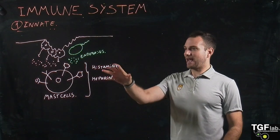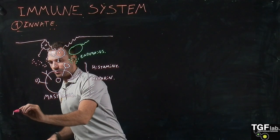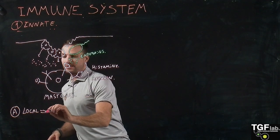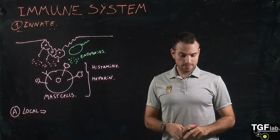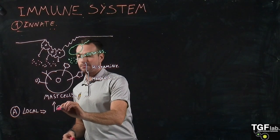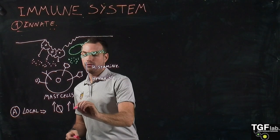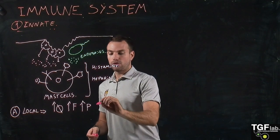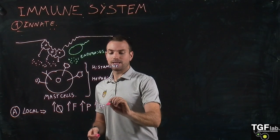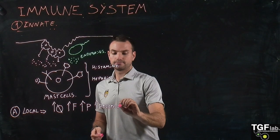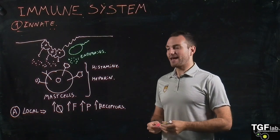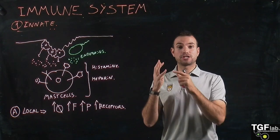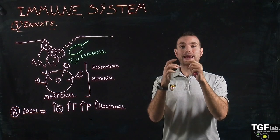These local effects are going to be mainly in the blood vessels. They are going to increase the diameter of the blood vessel, increase the flow, increase the permeability, and also increase the presence of different receptors on the endothelial cells. These changes in the blood vessel are also going to originate the four vital signs of inflammation: heat, redness, pain, and swelling.